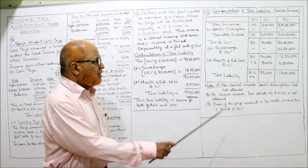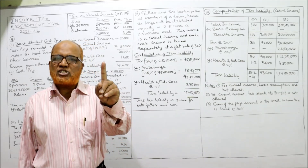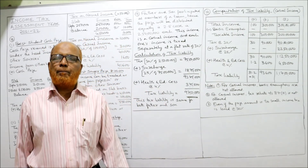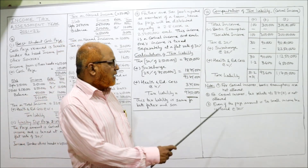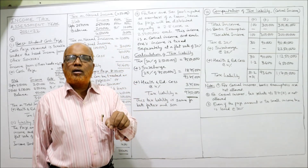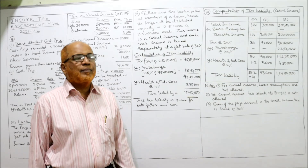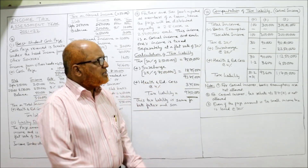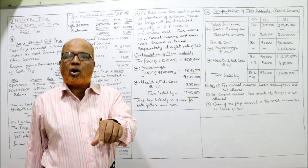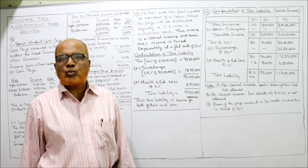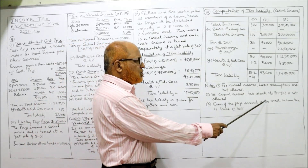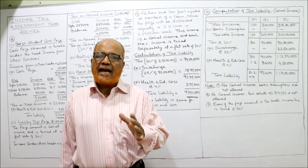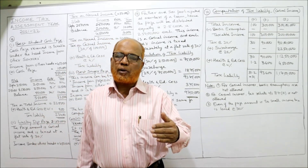Three important comments for Problem 10: First, no basic exemption is allowed for casual incomes. Second, no tax rebate under Section 87A is allowed for casual incomes. Third, even if the prize money is very small — like 100 rupees — tax at 30% is still levied. So even if the prize amount is too small, income tax is levied at 30% on casual income. Three problems — 8th, 9th, and 10th — are now explained. We'll continue with problem 11 in the next video.